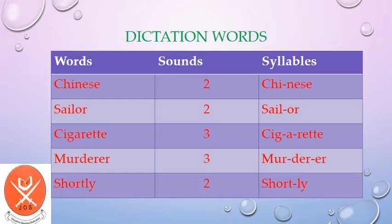Our first word is 'Chinese' — it has two sounds and two syllables: Chinese. Next word is 'sailor' — it has two sounds and two syllables: sailor. Next word is 'cigarette' — it has three sounds and three syllables: cigarette.